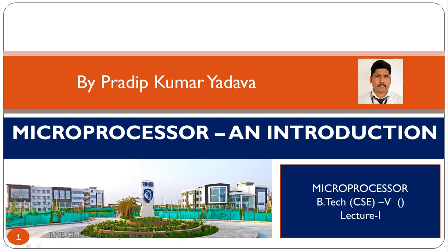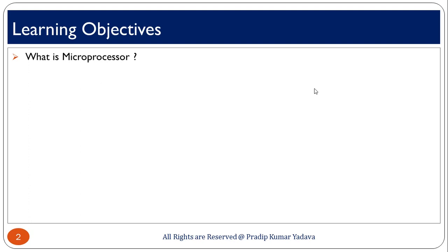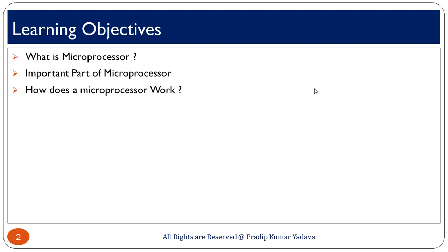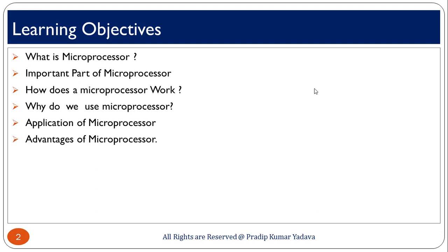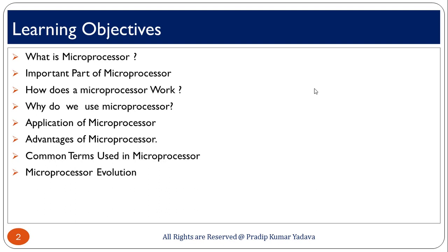Hello friends, I am Pradeep Yado. I welcome you all at my channel The Knowledge Adda. Today I am going to discuss microprocessor and its evolution. In this video I am going to cover what is microprocessor, important parts of microprocessor, how does a microprocessor work, why do we use microprocessor, application of microprocessor, advantages of microprocessor, common terms used in microprocessor, and microprocessor evolution. After finishing this video you can learn the following things, which are really important for basic knowledge about microprocessor.